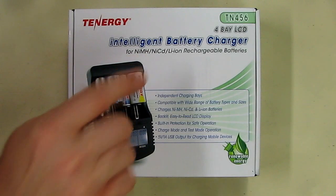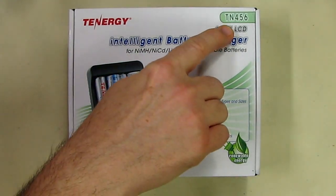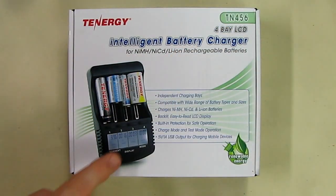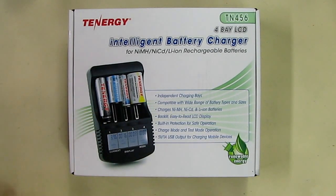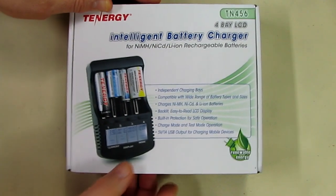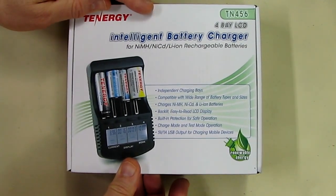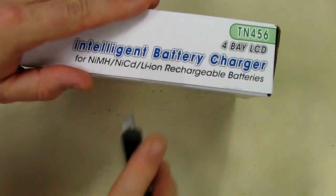This is an intelligent battery charger model TN456 and you can see it shows the various batteries that will charge. I'm going to be testing this with five different types of batteries and we'll see how it operates.